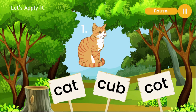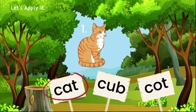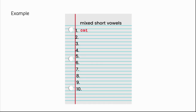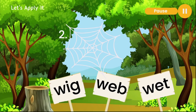Your job is to read each word and write down the word that matches the picture. Let's do the first one together. Cat, cub, cot. I read all three of the words before choosing my answer — cat. Your job now is to write the word cat next to number one on your paper. Now your job is to complete numbers two through ten by reading each word and writing the word that best matches the picture. You may hit the pause button to give you time to think and write down your answer. Don't forget to hit play to move to your next question.